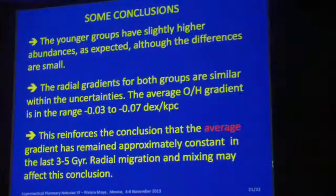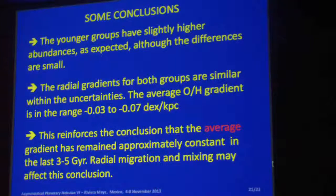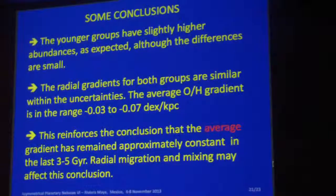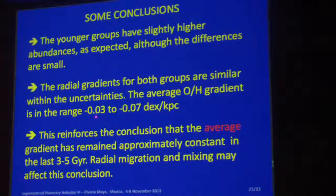We can get some general results. The first conclusion is that the younger groups almost always have higher abundances as expected, but the differences are small, though they are larger than the average uncertainties. The second is that the gradients are similar between the subsamples. It is not our goal to determine the average gradient, but we can have some kind of interval which is -0.04 to -0.02 dex per kiloparsec, and I am convinced that the actual level of the gradient depends strongly on the sample that you consider.